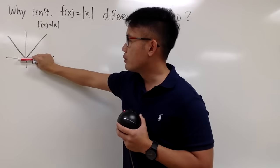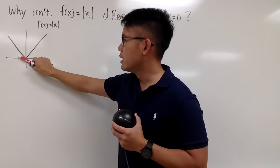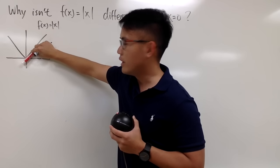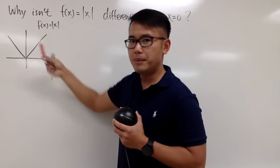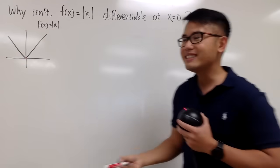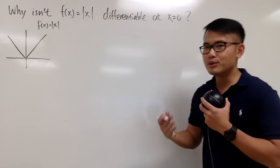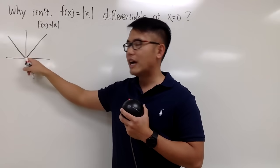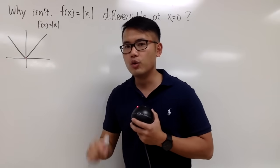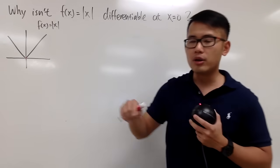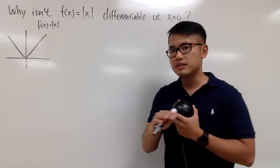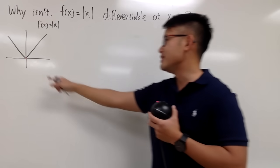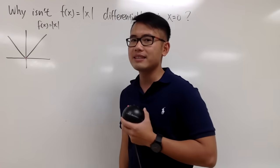Maybe we can do it like this, maybe we can do it like this, maybe we can just change to a different angle, and maybe not at all. In fact, this is how you can just look at a picture and see that whenever you have a corner, or maybe a sharp turn on the graph, it is not differentiable at those points. So this is an example of that.